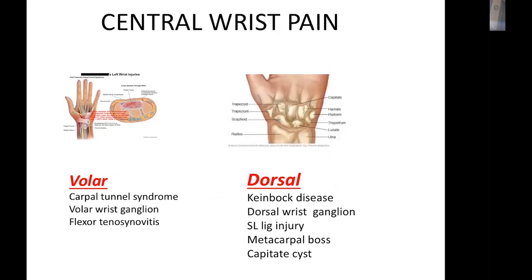The final region is central wrist pain. Volar causes include carpal tunnel syndrome, volar-resting ganglia, and flexor tenosynovitis. Dorsal causes include mainly Kienböck's disease and dorsal-resting ganglia, scapholunate ligament injury, third metacarpal boss, or capitate cysts.